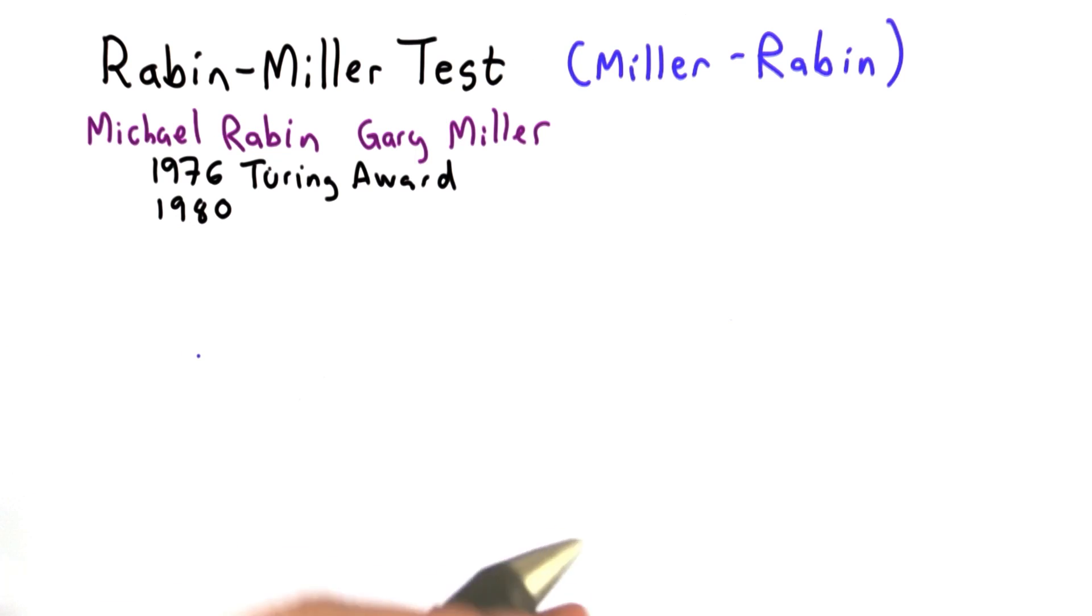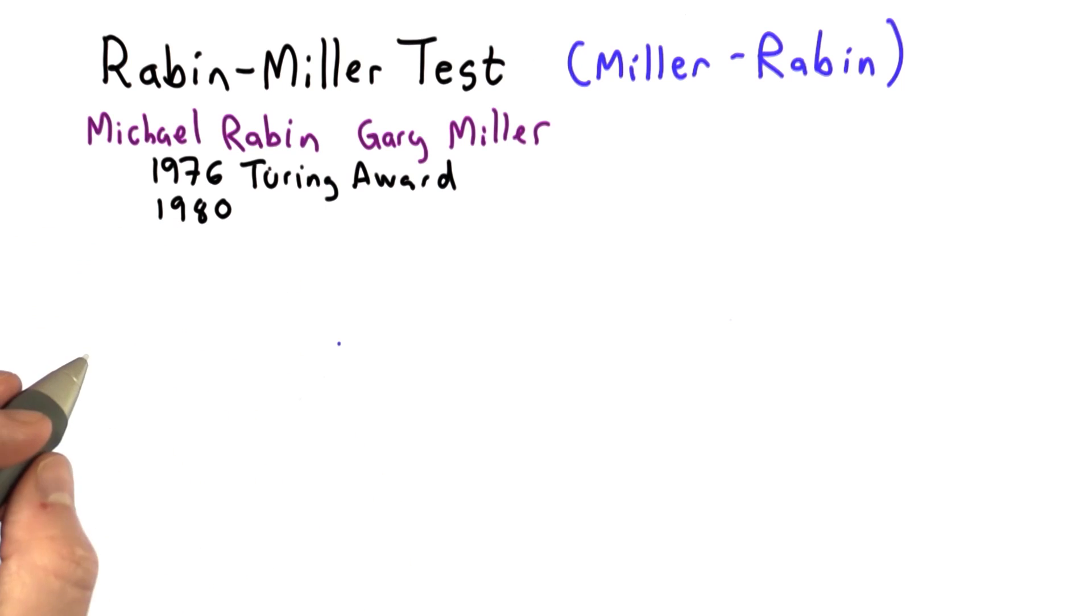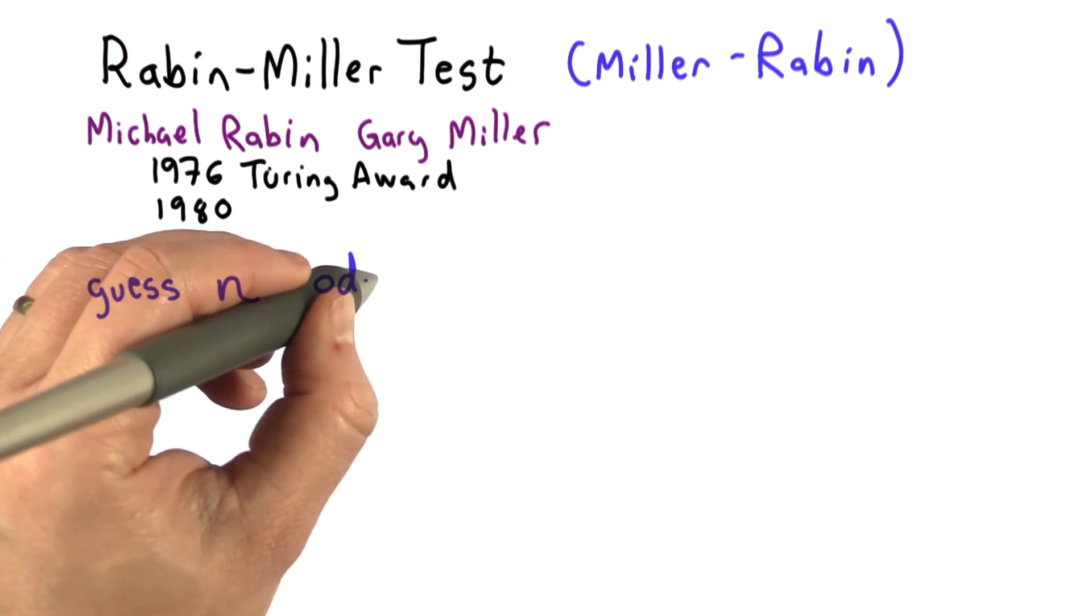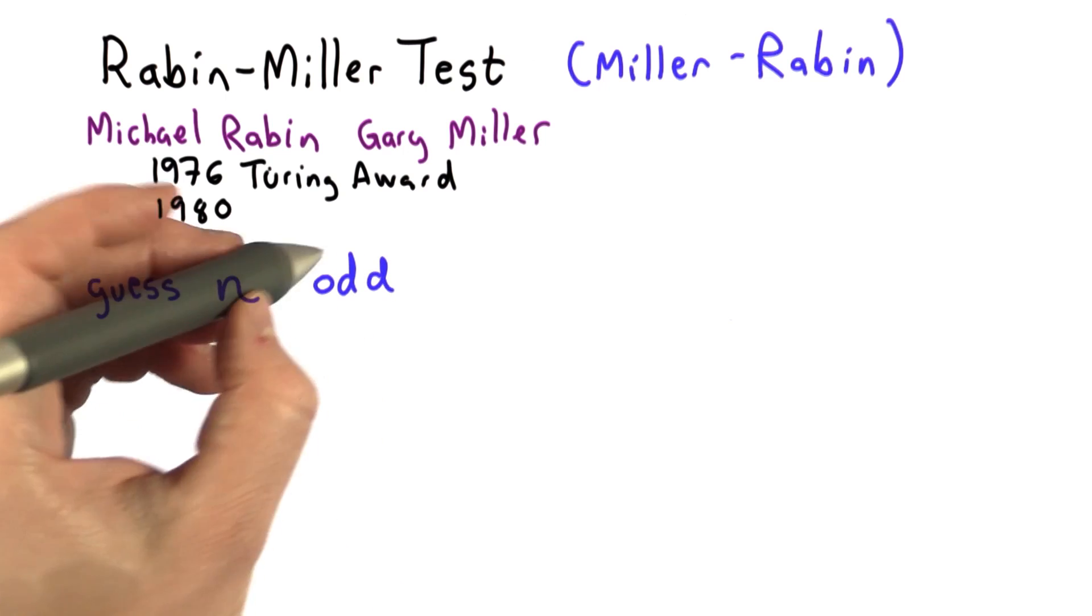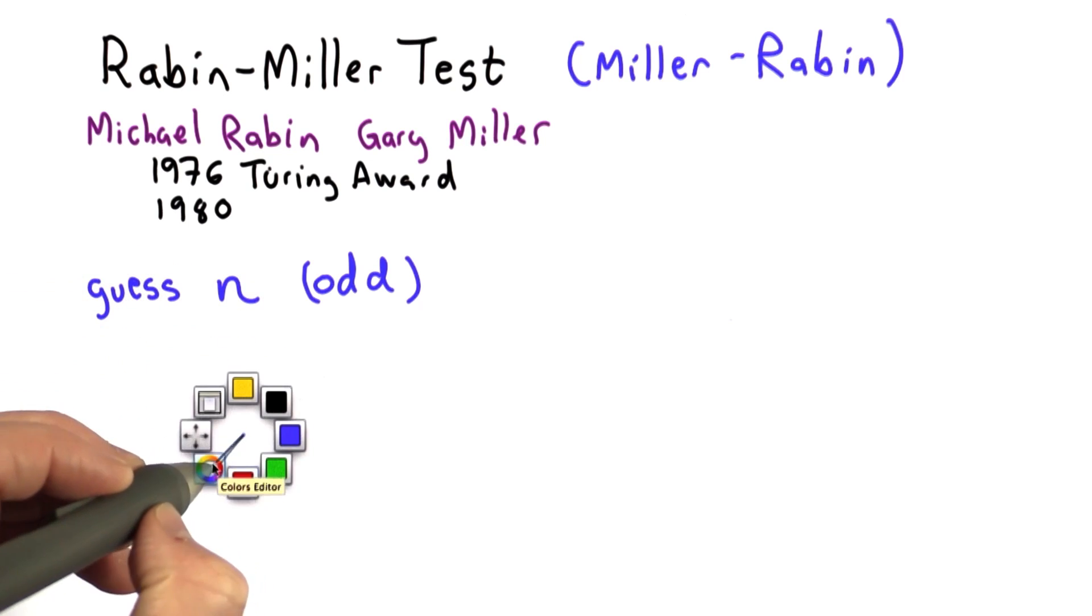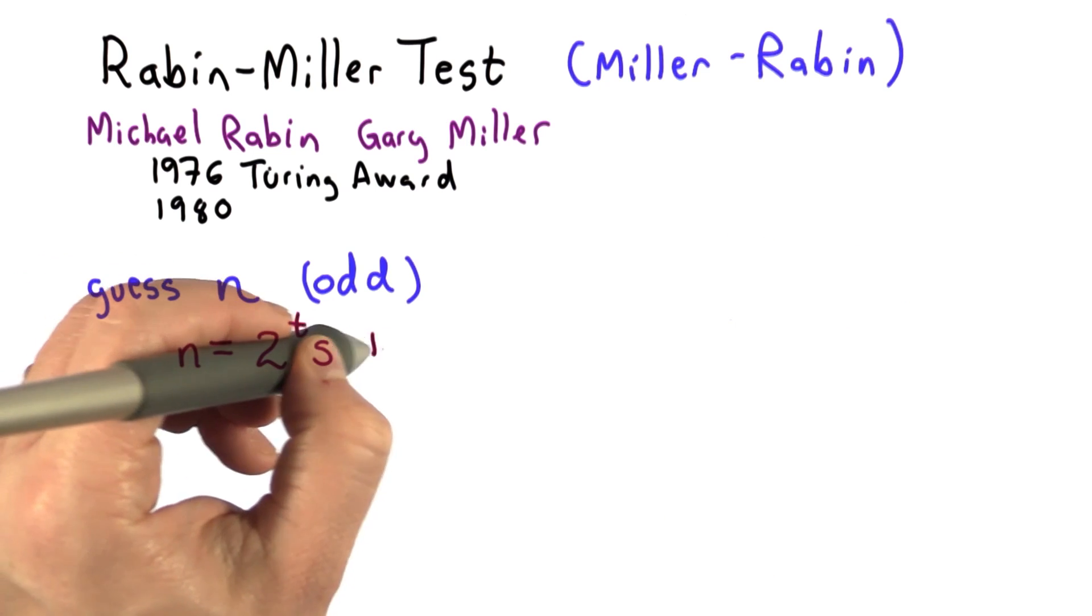So here's how this works. I'm not going to cover the mathematics behind it, but just enough to be able to implement the test. I'm going to start with our guess n, which must be odd. Obviously, if it's even, it's not prime. And because it's odd, that means we can write it as a multiple of 2 plus 1. So that means we can break n into 2 to some power t times s plus 1.